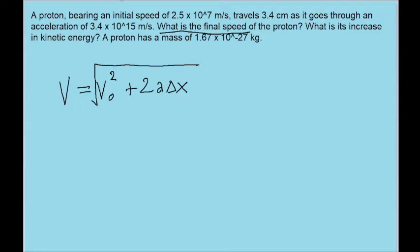Now we're given the particle's initial speed as 2.5 times 10 to the power of 7 meters per second. The acceleration is given as 3.4 times 10 to the power of 15 meters per second. And the distance that it travels through, delta x, is equal to 3.4 centimeters, or converting to meters, 3.4 times 10 to the power of negative 2 meters.